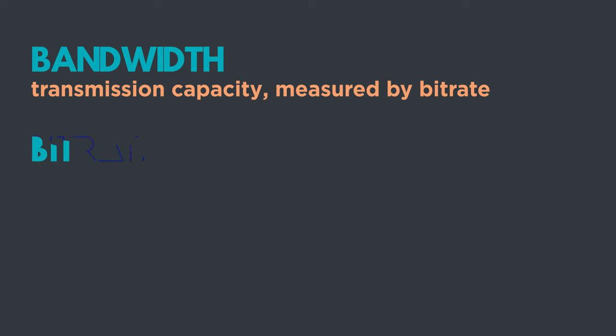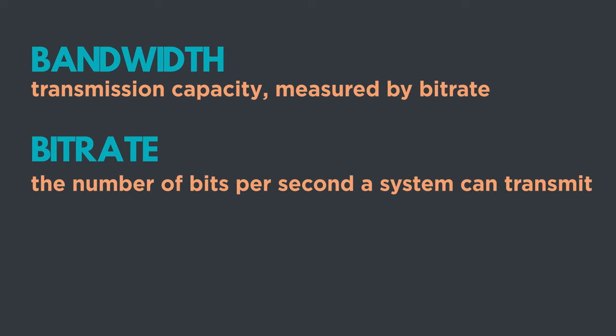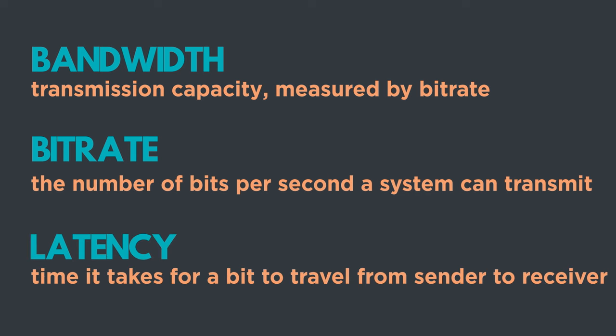Obviously, we'd like to send things a little bit faster than one bit per second, so we need to increase our bandwidth — the maximum transmission capacity of a device. Bandwidth is measured by bit rate, which is the number of bits we can actually send over a given period of time, usually measured in seconds. A different measure of speed is latency, or the amount of time it takes for one bit to travel from one place to another, from the source to the requesting device.